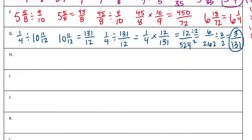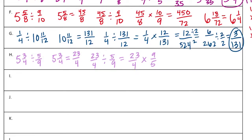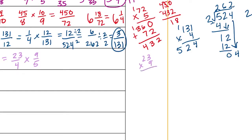Part H: five and three-fourths divided by five-ninths. Five and three-fourths equals five times four is twenty, plus three is twenty-three fourths. Twenty-three fourths divided by five-ninths — invert and multiply: twenty-three fourths times nine-fifths. Twenty-three times nine: nine times three is twenty-seven, carry the two, nine times two is eighteen plus two is twenty, giving two hundred seven. Four times five is twenty. Twenty goes into two hundred seven ten times — twenty times ten is two hundred — with seven left over, so ten and seven-twentieths.